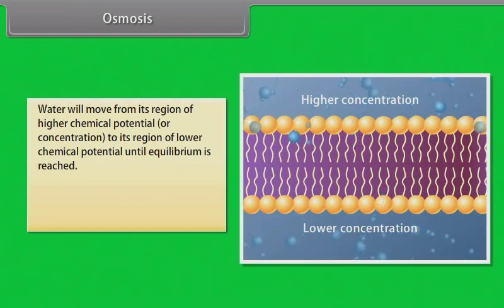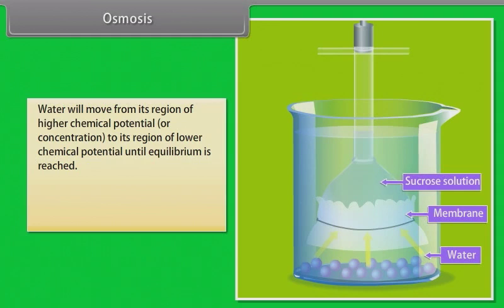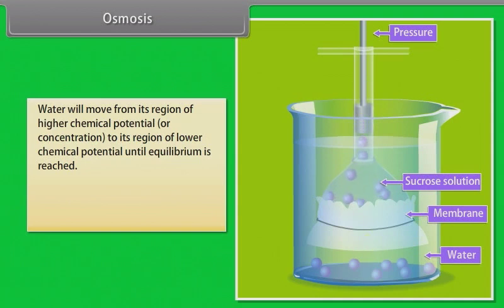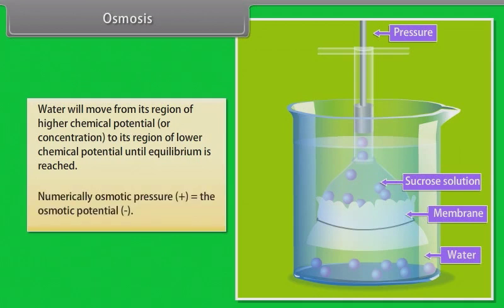We can better understand osmosis with the help of an experiment. Take a thistle funnel filled with sucrose solution and keep it inverted in a beaker containing water. The sucrose solution in the funnel is separated from pure water in the beaker through a semi-permeable membrane such as an egg membrane. We will observe that water diffuses across the membrane to raise the level of the solution in the funnel, continuing until equilibrium is reached. If we apply some pressure to stop the water movement into the funnel, this pressure required to prevent water from diffusing is the osmotic pressure, which is a function of solute concentration. More the solute concentration, greater will be the pressure required. Numerically, osmotic pressure is equivalent to the osmotic potential but the sign is opposite — osmotic pressure is positive while osmotic potential is negative.